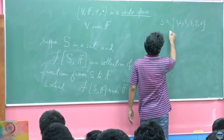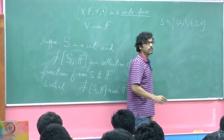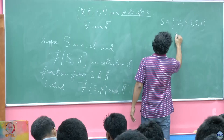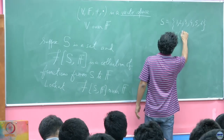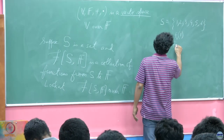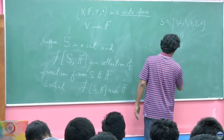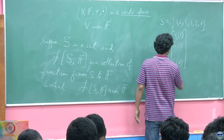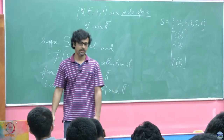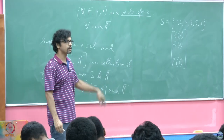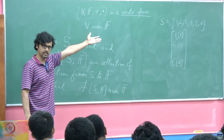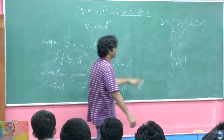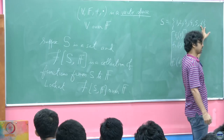Now just think about it. The moment I am giving you a particular function, what am I essentially telling you? If I give you these 6 numbers, I have told you all there is to know about this function, because this function is defined only over S. I do not care about what it does over other points because that is not part of its domain. So I could have just carried on with this till any n.